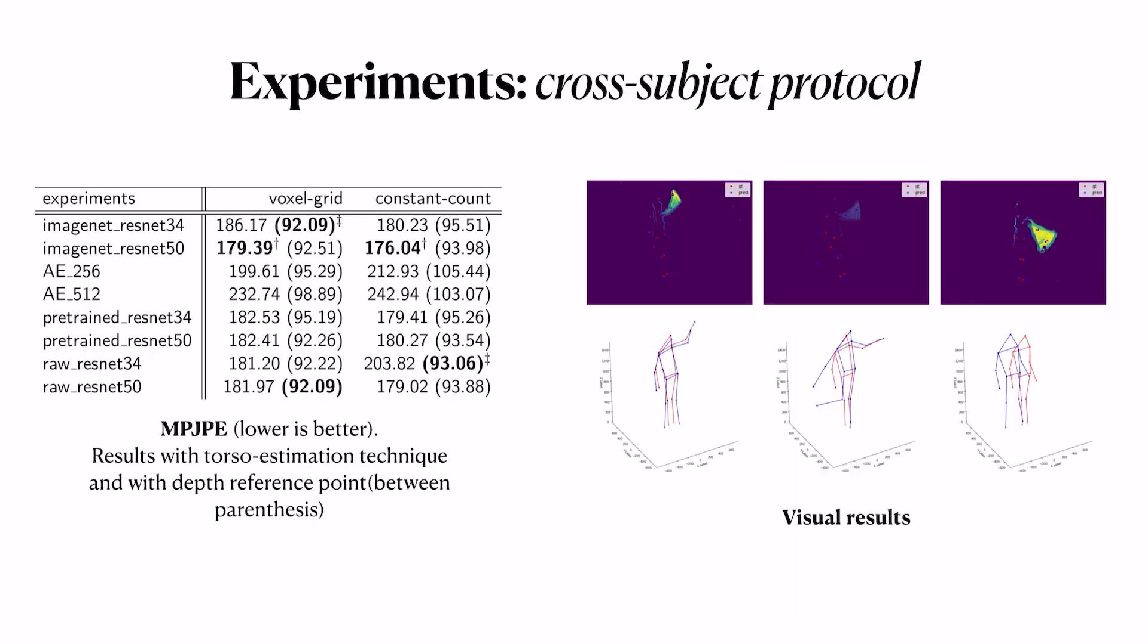And here, I propose some results. Particularly, I think it's interesting to discuss the visual results on the right. As I talked before about event cameras, they don't capture information if the subject or if objects are not moving, so are static. And in the middle column, you can see the legs and the part of the arms of the person are still static, so no events are occurring, and the precision error is high. In particular, this is really an issue for event cameras, because if the subject is not moving, you can't predict the skeleton.